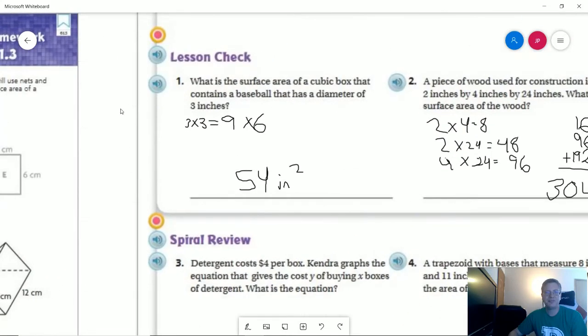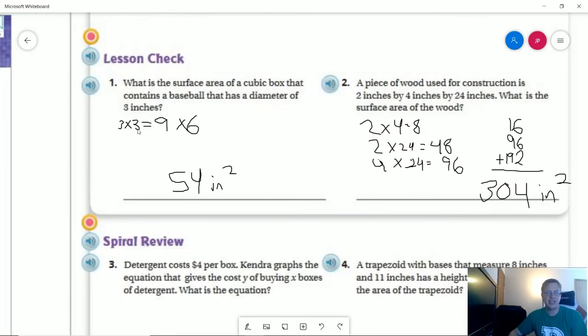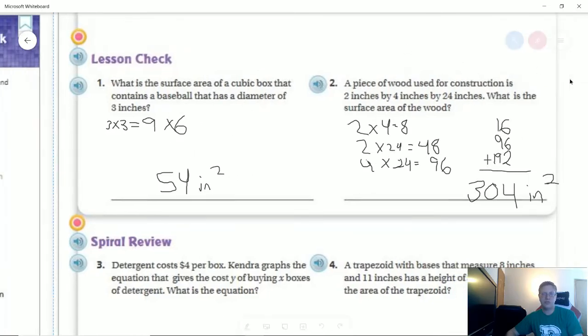So number one on the back. Again we're going to use our diameter of the baseball. It's going to fit inside, which means the baseball is going to be the same size as the length and width. And so that's going to be 3 times 3 is 9. We have 6 faces for the box because it's cubed. And that would give us 54 square inches for the surface area.